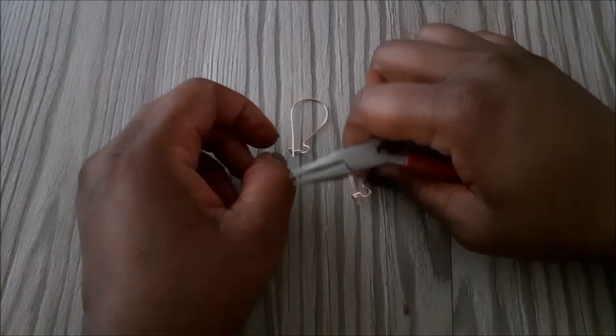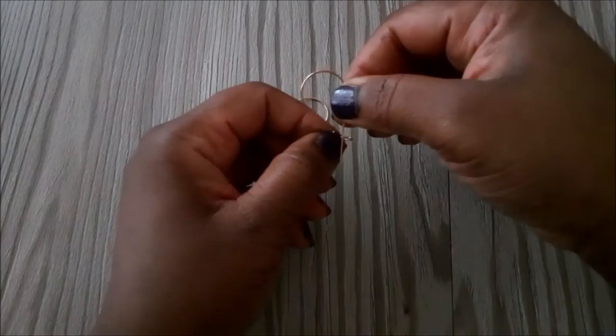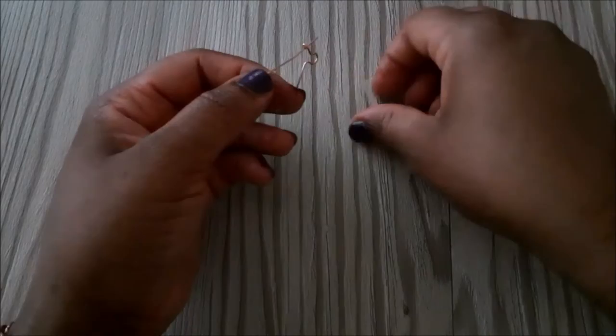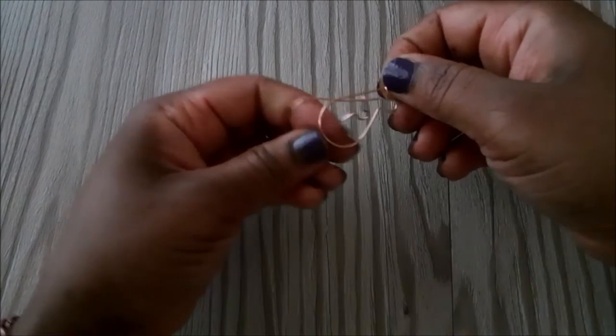So I'm just using my chain nose pliers to make this area a bit more straight. Next we're just going to place them together, then we're going to use the back of our flush cutter to trim the excess.